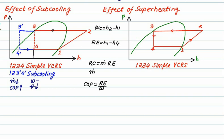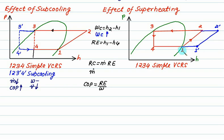Now we will discuss the effect of super-heating. The simple VCRS cycle is 1-2-3-4. Because of super-heating, point 1 will shift to the right side, and the graph moves right. With super-heating, h2-dash minus h1-dash is greater than h2 minus h1, so the work required by the compressor will increase. The refrigerating effect is h1 minus h4 for the simple cycle.